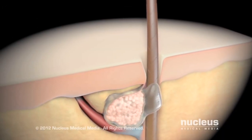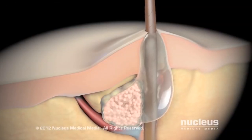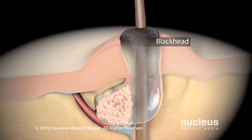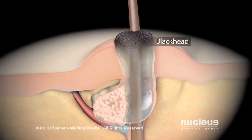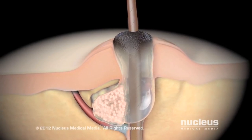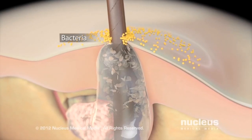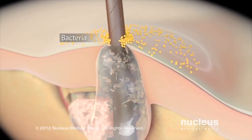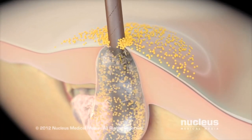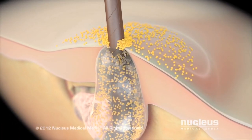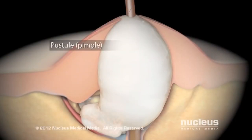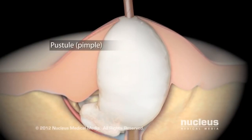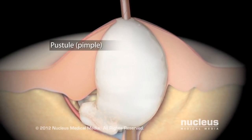If the pilosebaceous unit is only partially blocked, oxygen from the air can enter and react with the melanin inside keratinocytes, causing the pimple to appear black. This is called a blackhead or an open comedone. If the hair follicle is completely blocked, however, normal bacteria that colonise the skin can start to overgrow, stimulating an immune response. This results in inflammation and the production of pus, causing it to appear white. This is called a whitehead or closed comedone.